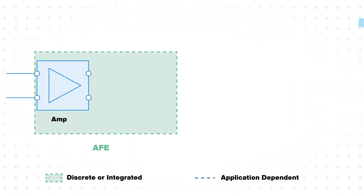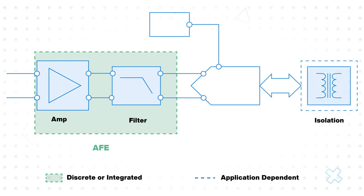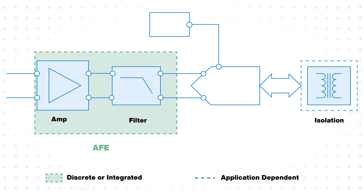The process of translating from the analog domain to the digital domain involves a number of signal conditioning steps, which we call the signal chain. This often includes amplification, filtering, and conversion. It can also include isolation depending on the voltages present in the application. In design, we want to achieve the highest precision possible while optimizing the signal chain.